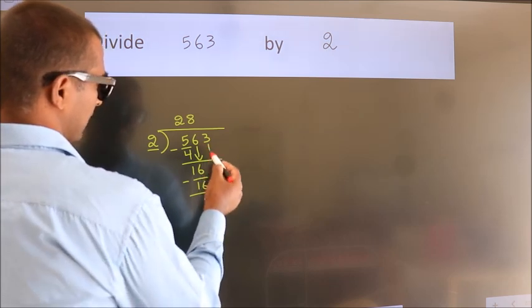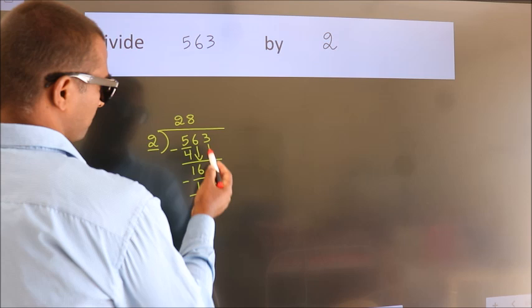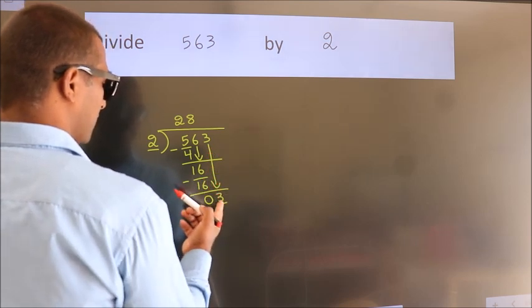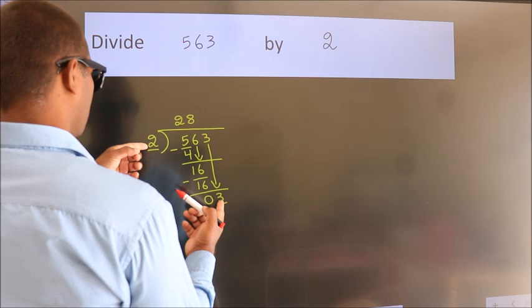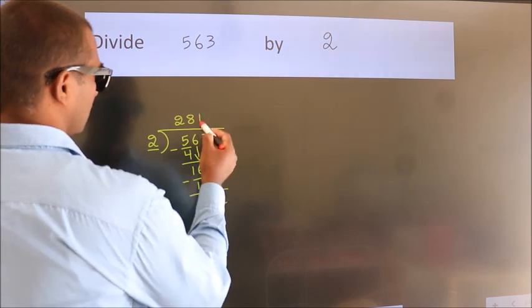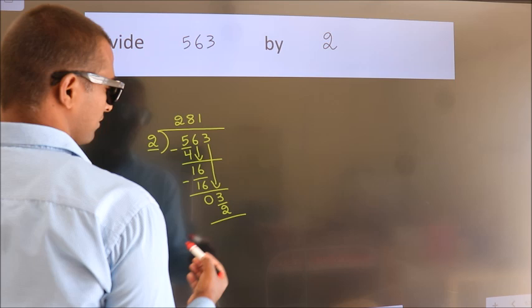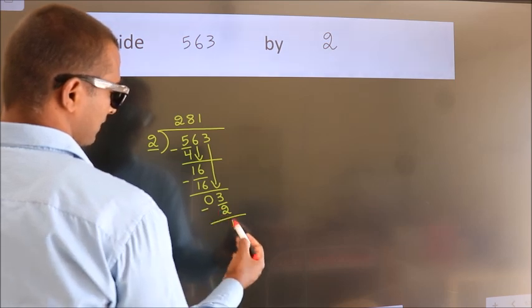After this, bring down the beside number. So 3 down, making 3. A number close to 3 in the 2 table is 2 times 1, which is 2. Now we subtract. We get 1.